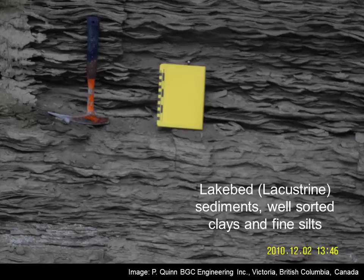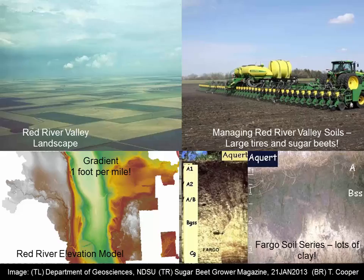We have this huge glacial lake, and in the center of that lake, water velocities were very low. So we deposited very well-sorted clays and fine silts. When we think about Glacial Lake Agassiz, the central part — the Red River Valley — is flat with high clay content. These soils are Vertisols, which means they're really high in clay. It's one of the flattest landscapes in the United States, about a foot per mile in the center of the valley. We grow sugar beets up there — they're difficult soils to manage. Here's the Fargo soil series — lacustrine sediments from the center of Glacial Lake Agassiz.